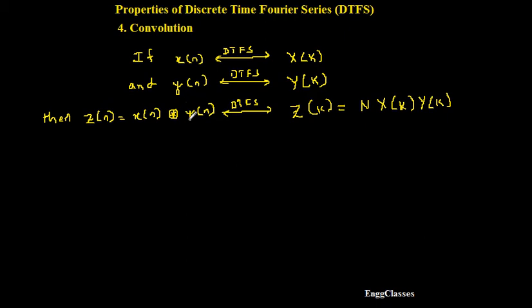So this is the expression for convolution in DTFS. The statement is: convolution in the time domain is equal to multiplication in the frequency domain. You can check that X of k is getting multiplied with Y of k, which is multiplication in the frequency domain. Now let us consider the proof.